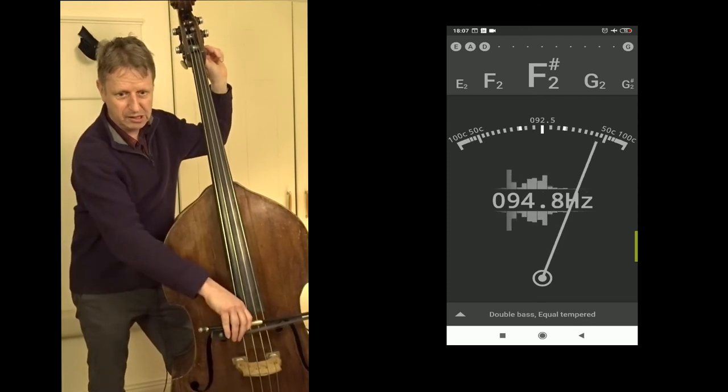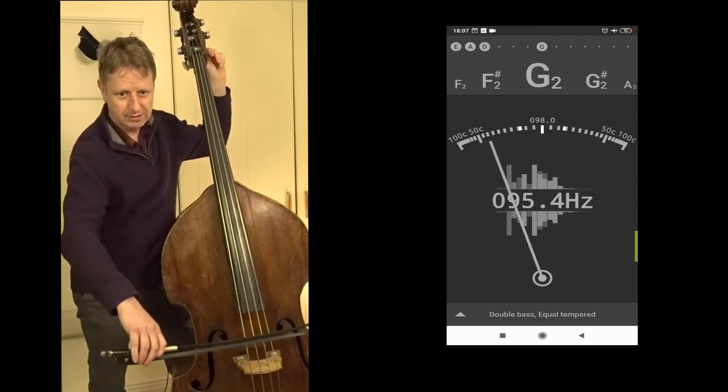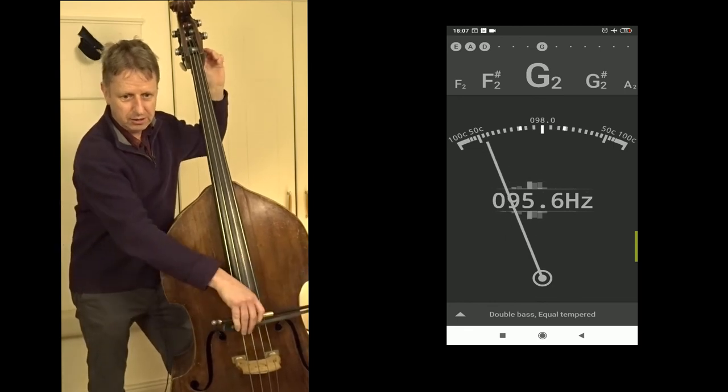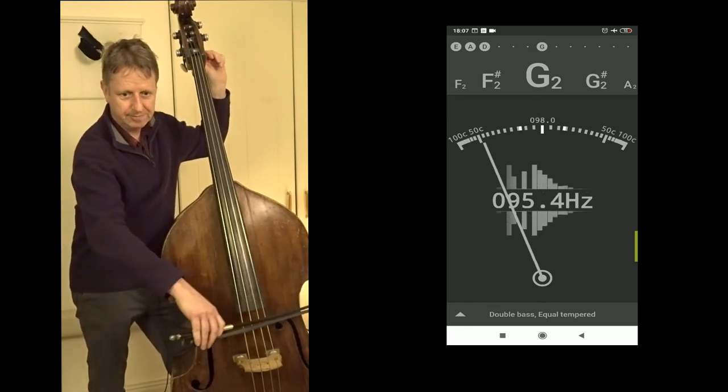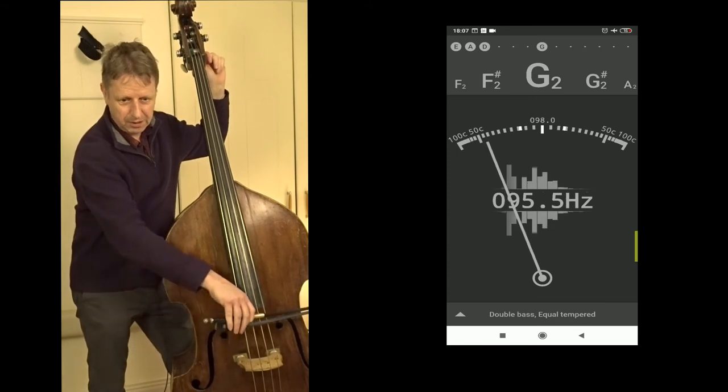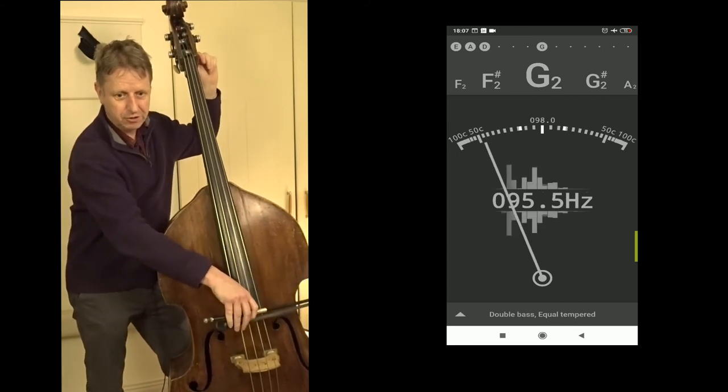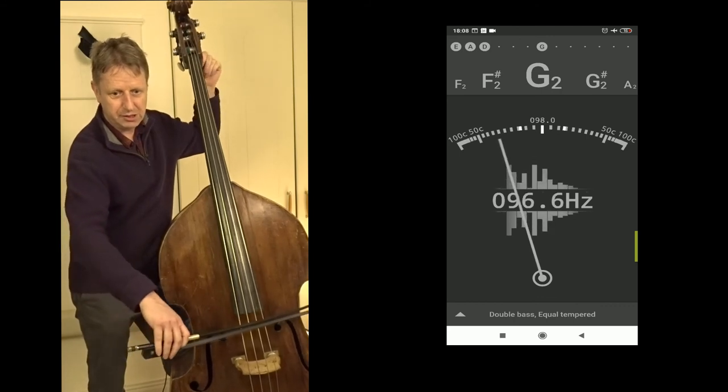So it's not recognizing it as a G yet. There we go, it's now reading that as a G, G2, that's what I want. But of course it's too low for a G, for an in-tune G I should say. So there I go turning.